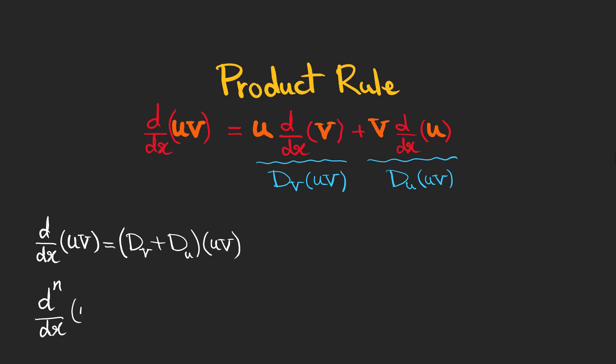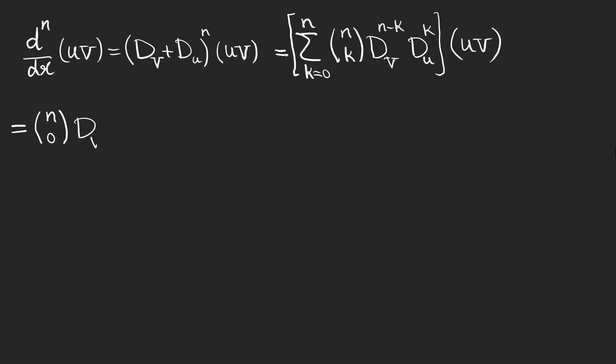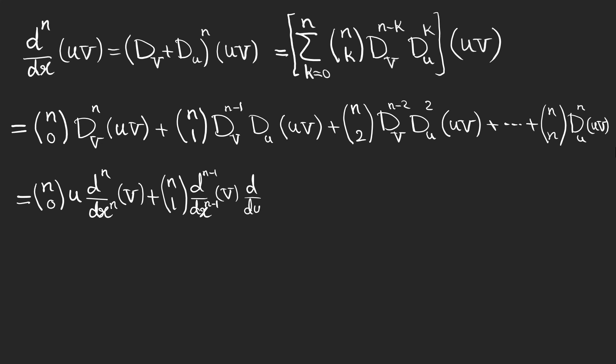If we want to find the higher order derivatives of the multiplication of the two functions, we can write it as a binomial expansion of dv and du. If we expand the sum, the expression we have is like this, and it simplifies into this one, which is actually simpler and more direct.